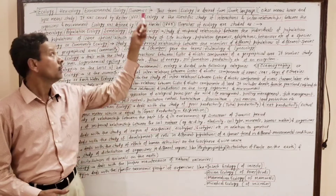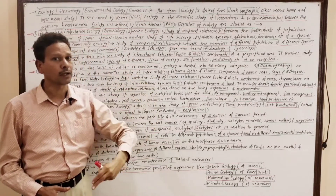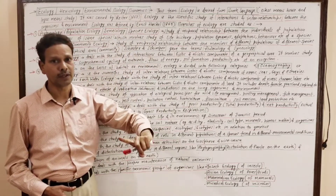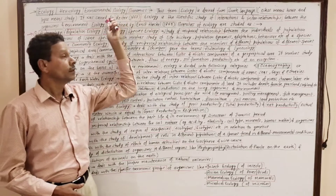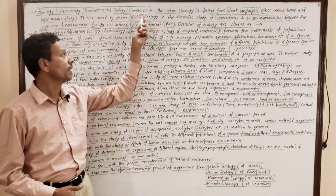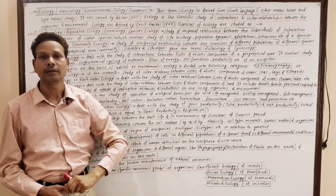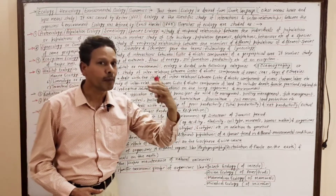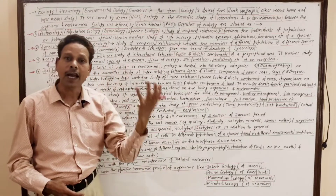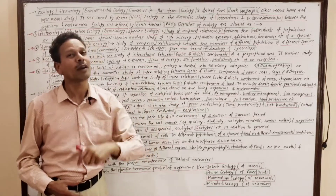This term ecology was coined by Ritter in 1868, while this term ecology was defined by another scientist, A.S. Haeckel, in 1869. Ecology may be defined as the scientific study of interactions and interrelationships between organisms and their environment.